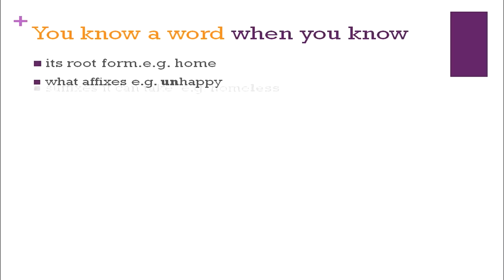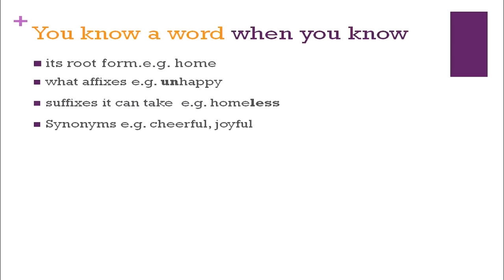You know a word when you know its root form — for example, 'home' — the affixes it can have. For 'happy' we can use the affix 'un' to make 'unhappy', or suffixes like 'homeless'. Then synonyms: 'cheerful' and 'joyful' are synonyms of each other. You can add 'happy' to that set. Now the antonym of 'joyful' is 'sad'.